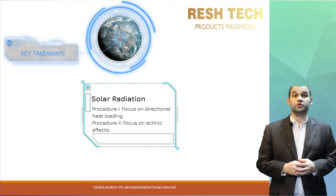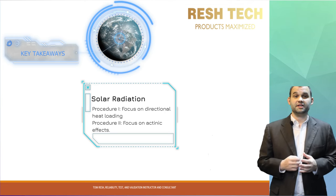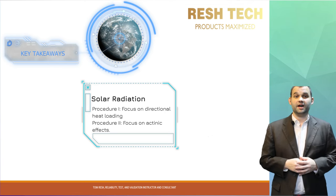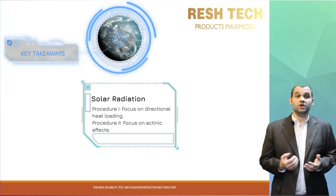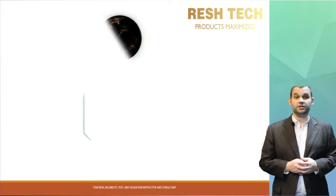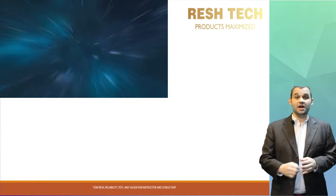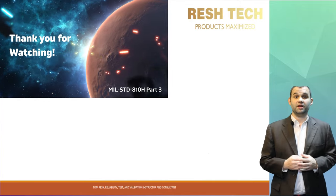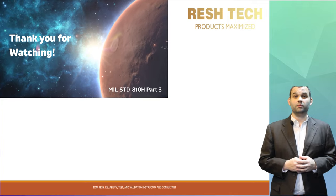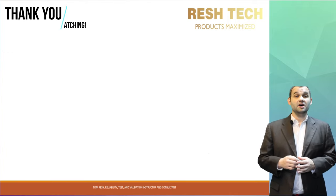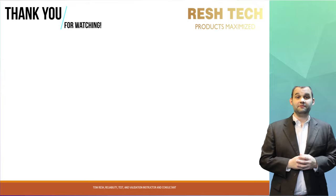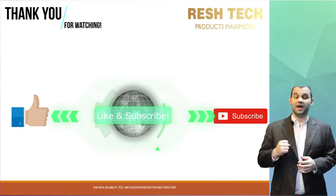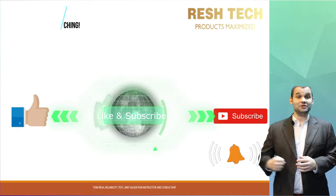Both tests can be accelerated to reduce test time or simulate a longer span of mission or field time, but you need to be careful not to accelerate the test to a point where the results are unrepresentative of what your system would endure in field operation. Thank you for watching. If you need help developing an environmental test plan for MIL-STD-810H or planning, setting up, or performing solar radiation or contamination by fluid tests, feel free to reach out via the link above or in the description. If you enjoyed this video, don't forget to hit the like button, subscribe, and ring that bell. Thanks for watching and have a super day!